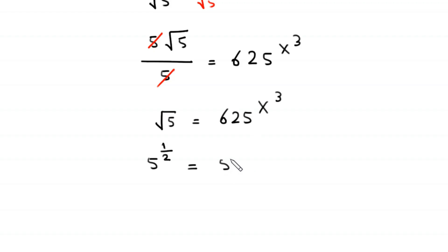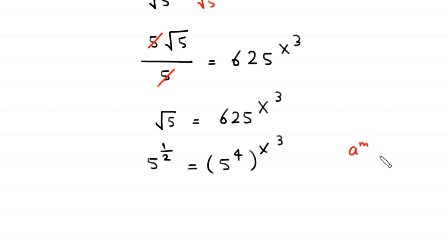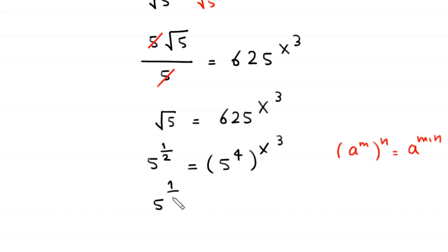Now 625 is the same as 5 to the power 4, so the right side becomes 5 to the power 4, raised to x cubed. By using the property of exponents — a to the power m, whole to the power n, equals a to the power m times n — this becomes 5 to the power 1 over 2 equal to 5 to the power 4x cubed.